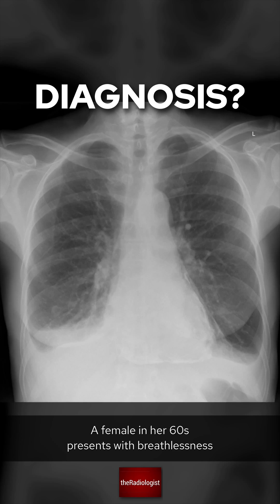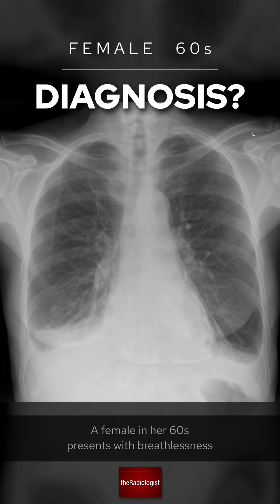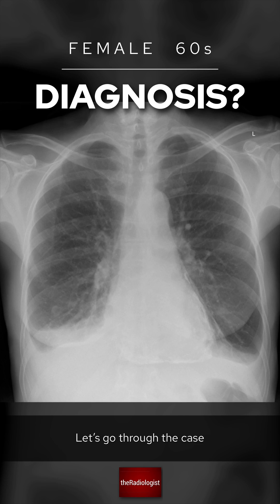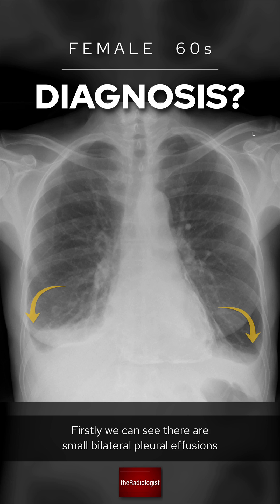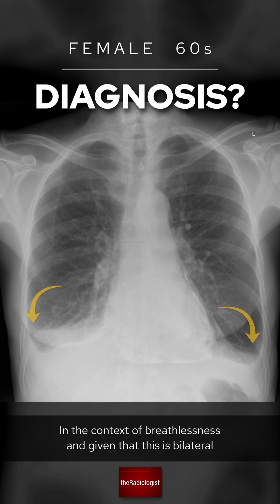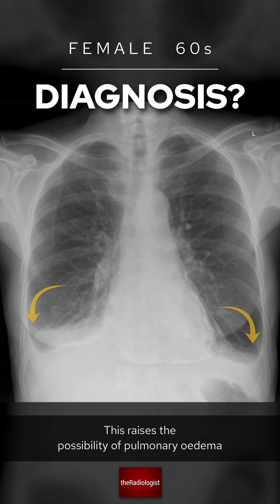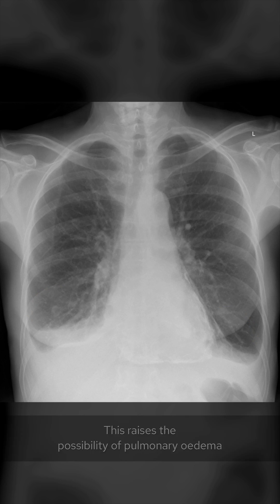A female in her 60s presents with breathlessness. Let's go through the case. Firstly, we can see there are small bilateral pleural effusions. In the context of breathlessness, and given that this is bilateral, this raises the possibility of pulmonary edema.